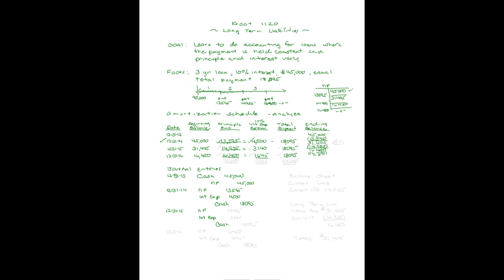Let's go out another year to 12-31-15 — that takes me to the end of my second payment. It'll be notes payable, interest expense, and cash. We can grab it right off our amortization schedule: principal $14,955, interest $3,140, total payment always $18,095. That takes us out to the end of the second year.